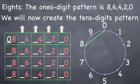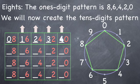The eights start with 0 in the tens place, and then go up to 1, up to 2, up to 3, and up to 4, creating 8, 16, 24, 32, and 40, the first 5 eights.